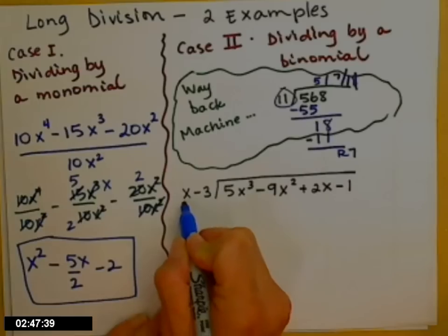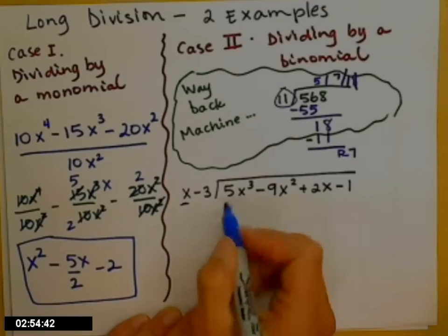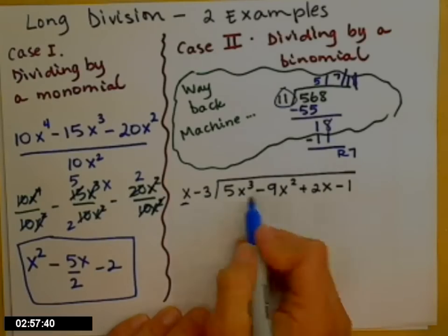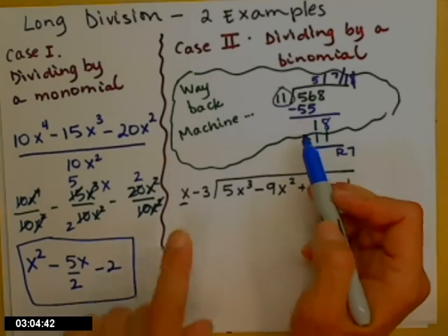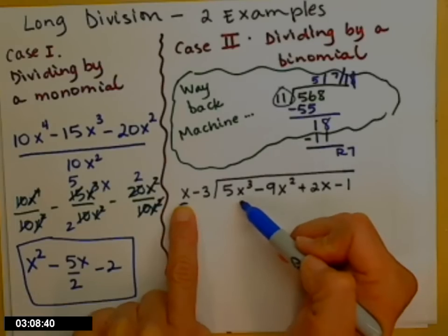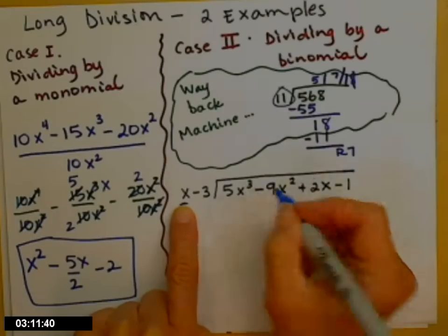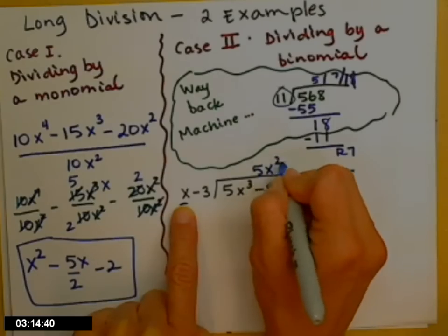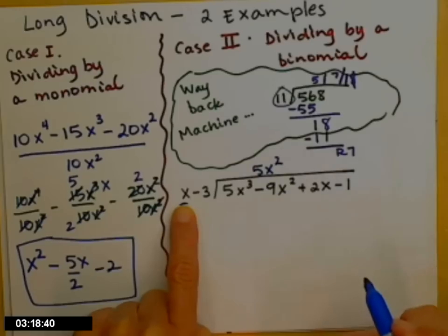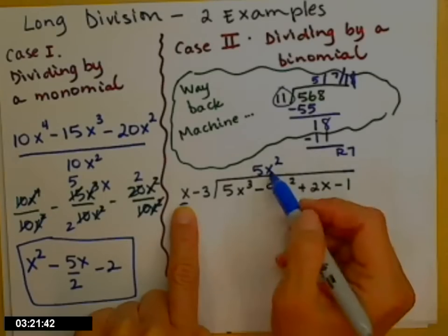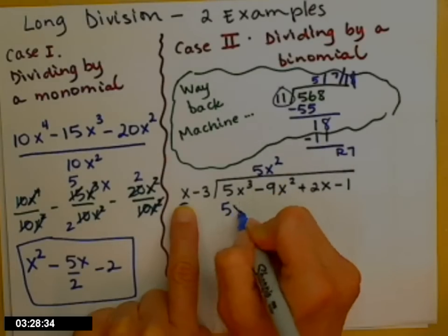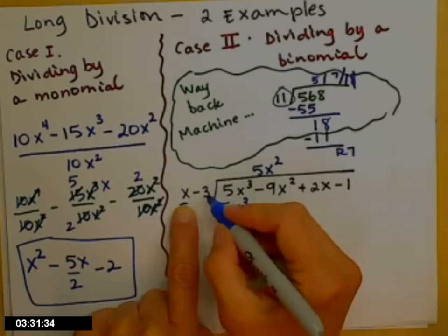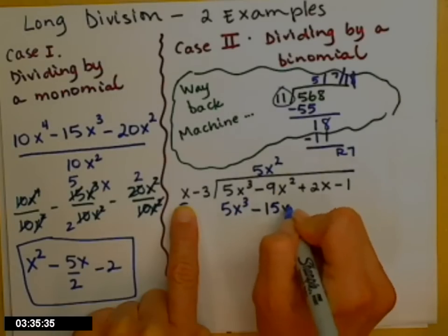When I start, I'm just going to look at the term with the highest power out in front — that's x to the first — and the term underneath with the highest power. This time I want to get exactly that. So, x times what gives me exactly 5x cubed? You answer 5x squared. 5x squared times x gives me exactly 5x cubed. Now I take the 5x squared and multiply it by both pieces out here in front: 5x squared times x gives the 5x cubed, and 5x squared times negative 3 gives minus 15x squared.